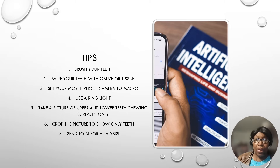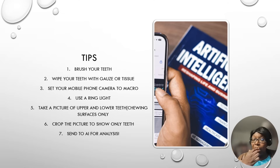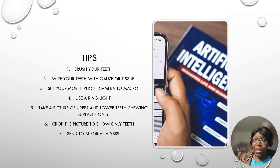Open wide and take a picture of the chewing surface, then take a picture of the upper teeth separately. After that, edit the picture — crop it to show only your teeth, not your face, focusing on the chewing surfaces. Then send it to the AI for analysis and it will send you a personalized report.